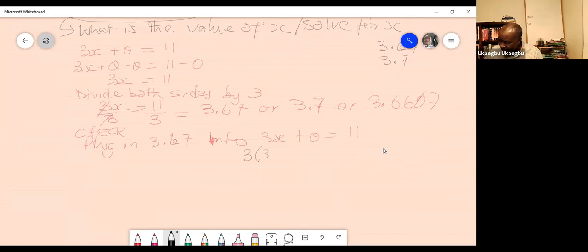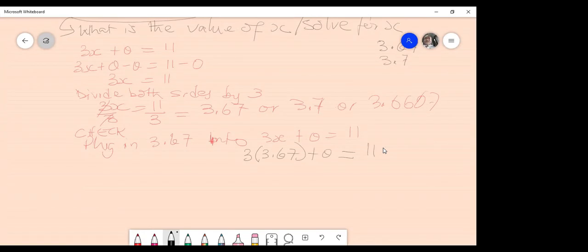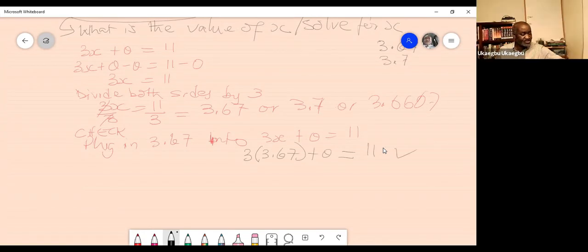So let's try it. 3 bracket 3.67 plus 0. Is it equal to 11? Is it equal to 11? Approximately, yes. Okay. So this is correct. So we just did that.